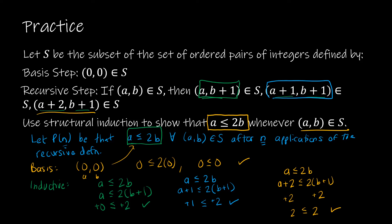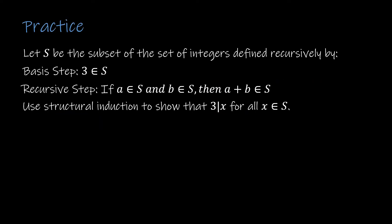That is all we need for structural induction: based on the three cases, the relationship a ≤ 2b is not violated. Here's a question for you to try. The conjecture is already given, but you can find it quickly by computing some initial values from the recursive definition. The basis step tells us that 3 is in S. The first application of the recursive step says if a is in S and b is in S, then a + b is in S — so taking three plus three gives six.